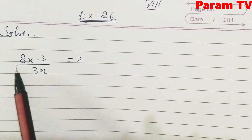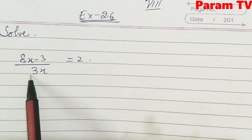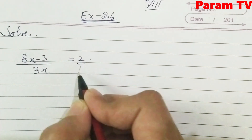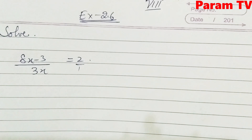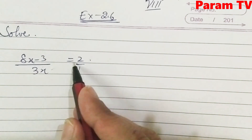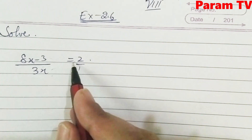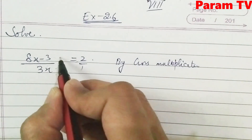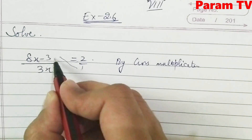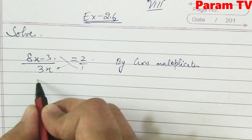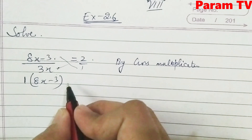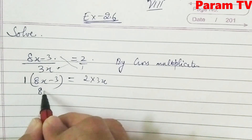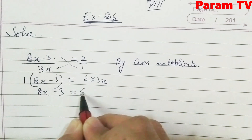The first question is: (8x − 3) / 3x = 2. Here, 2 means 2/1 because there is no denominator. So what do we do? Cross multiply. By cross multiplication: (8x − 3) × 1 = 2 × 3x.